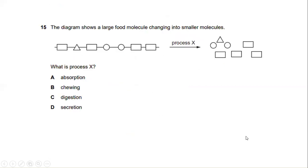The diagram shows a large food molecule changing into smaller molecules. What is the process X? We know that ingestion, food is taken into alimentary canal. And digestion is the breakdown of food into smaller pieces without chemical change to the food molecule. So the answer will be C, digestion.